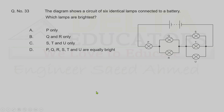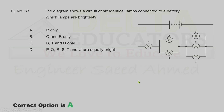Question 33. A circuit has six identical lamps connected to a battery. Which lamp is brightest? Lamp P carries all the current before it splits, so it carries the most current and is the brightest. Correct option is A.